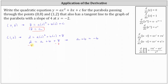For the third condition, we know the parabola has a tangent line with a slope of 4 at x equals negative 2, which means at x equals negative 2 the derivative function value is equal to 4. This indicates that y prime of negative 2 is equal to positive 4.